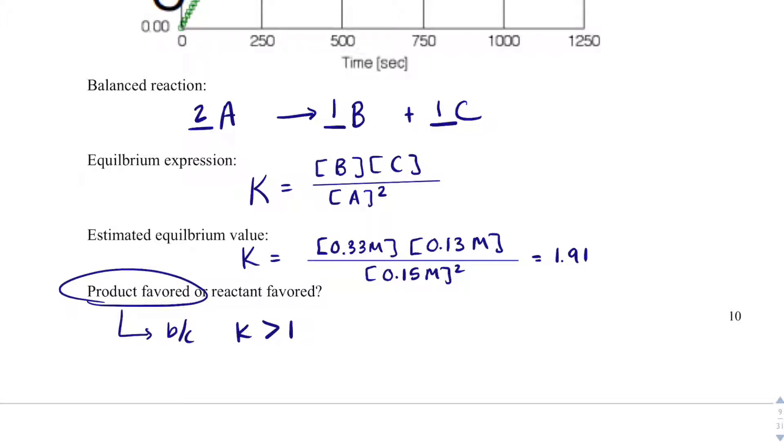Some people will say K is positive, so it must be product favored, but remember, we plugged in molarities here, and molarities are always positive, so K always has to be positive. This is just saying that our numerator was larger than our denominator, and our numerator consists of products, so it must be product favored.